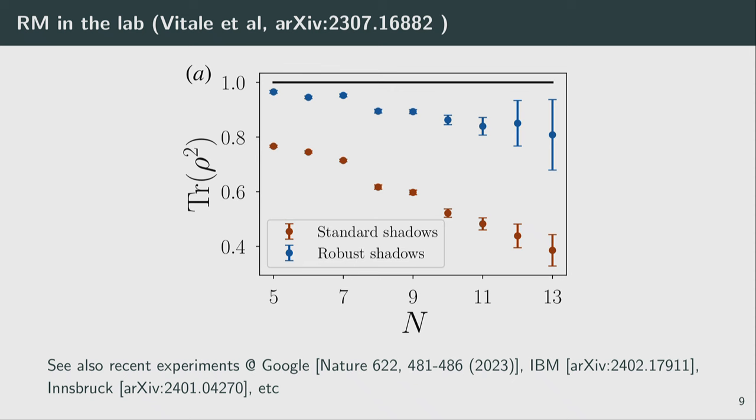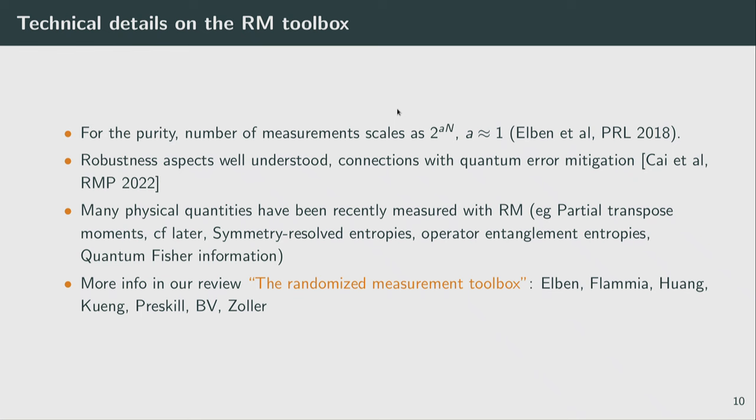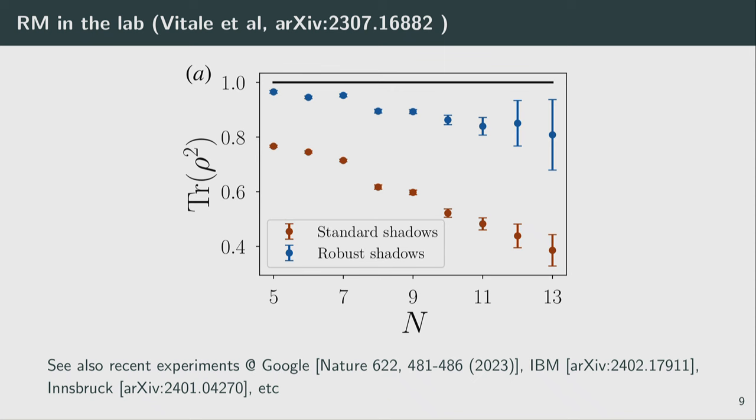It's an unbiased estimate. Typically, if I will repeat this experiment many times, my estimator will be symmetrically distributed around the exact value. Robust is this updated method, and we believe that's the true purity. The blue one. The standard one is the one without noise mitigation. It is much lower, because what happens is that while you are measuring, you are putting some noise, so the purity of the state decays effectively. So we are measuring some kind of state affected by the measurement itself.